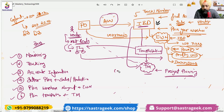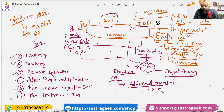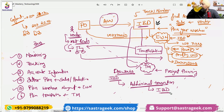But there are also cons — drawbacks of using inbound deliveries. The main drawback is that it is an additional transaction. Someone needs to punch that information into the system and create the inbound deliveries. Although it gives better tracking and better monitoring, we still need to create the inbound delivery.